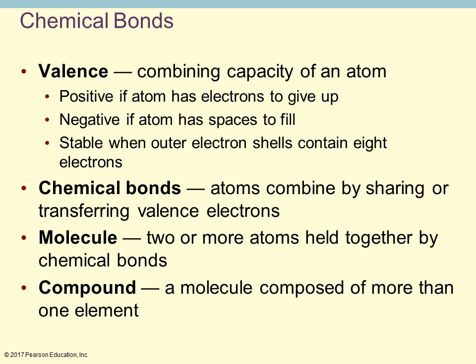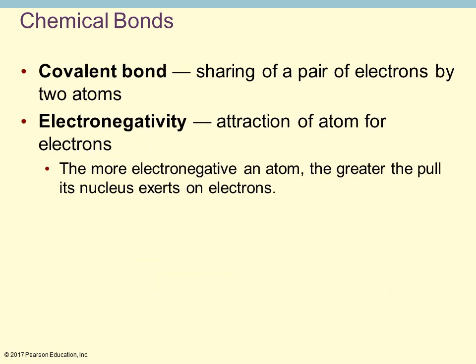A molecule is two or more atoms held together by chemical bonds, and a compound is simply a molecule that has more than one type of element — such as carbon and hydrogen, or carbon and oxygen. There are three main types of bonds in biology and physiology. Electronegativity is the attraction of an atom for electrons — the more electronegative an atom is, the greater the pull.